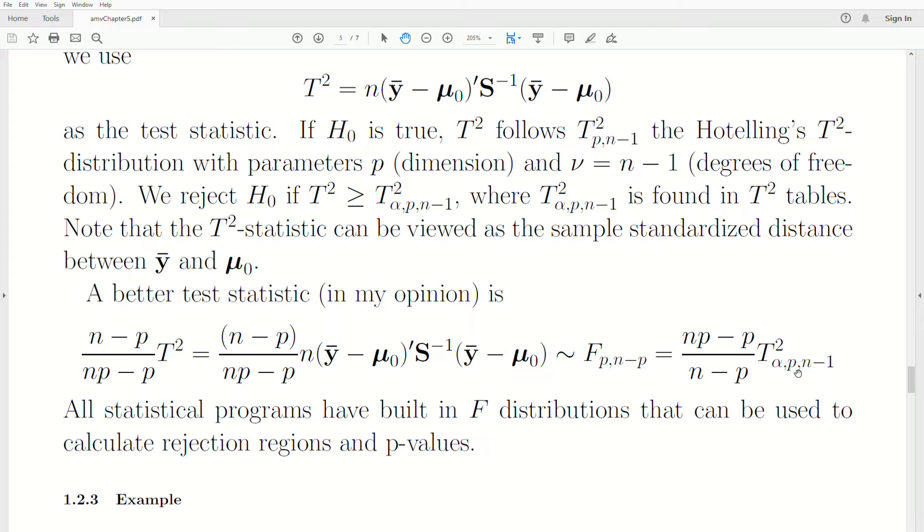The reason that this one I like better, and several books like better, is that F-distributions have built-in functions. All statistical programs have an F-distribution built-in. And so, you can calculate, you don't need a book to calculate these T² values.